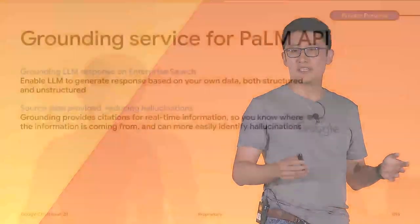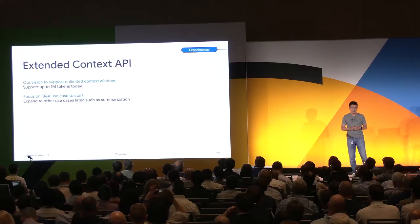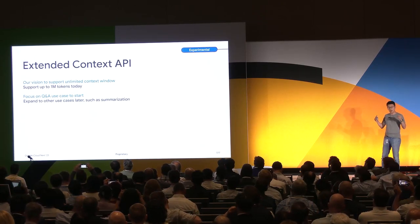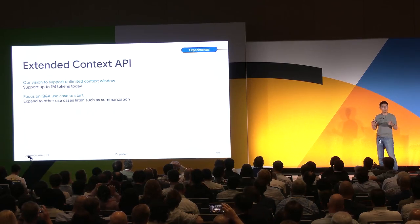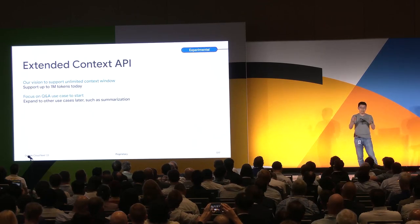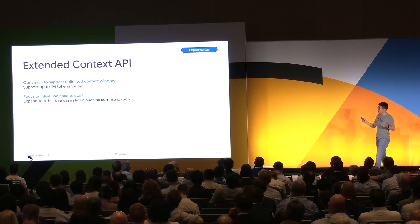From Thomas' keynote, you may have heard grounding mentioned multiple times. We see grounding as a key element of our product experience, and hallucination is one of the top concerns from customers. So we created an enterprise grounding service that works across Vertex AI foundational models, search, and conversation — support for Palm API is now in private preview. Another cool feature is the Extended Context API. It is our vision to support an unlimited context window so developers don't have to worry about chunking input and modelers don't have to worry about quality degradation as the window size increases. We're testing this with a few customers and seeing great results. Peng Long-Ling is going to show you some live demos about this.